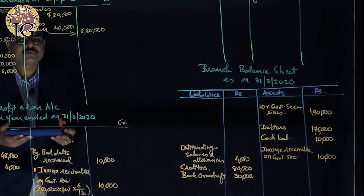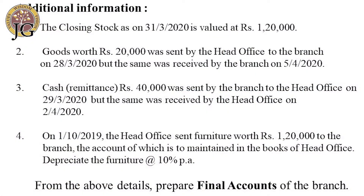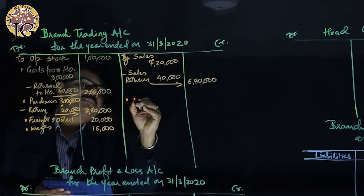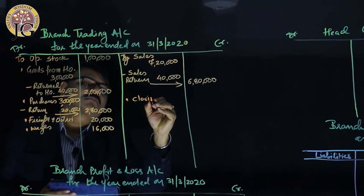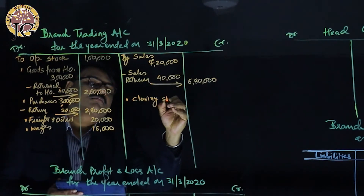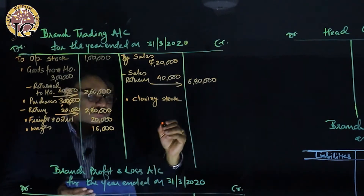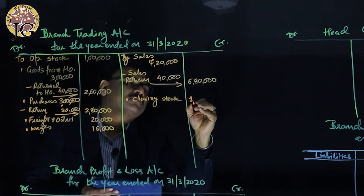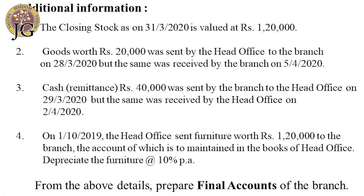The closing stock is valued at ₹1,20,000. It has two effects: it is shown on the credit side of the trading account as 'by closing stock ₹1,20,000', and it is also recorded as an asset in the balance sheet.